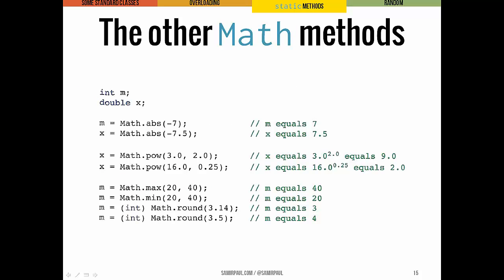Real quick, here are some examples of the other methods that we defined back there in the Math class. This is only a small sampling of the methods that are actually in the Math class, but these are the ones that appear on that slide back there. You can see we have an integer called m, a double called x.